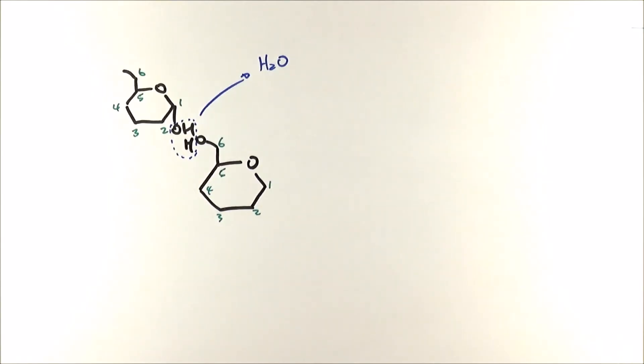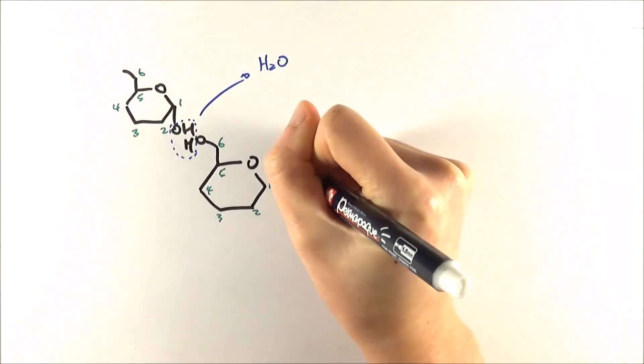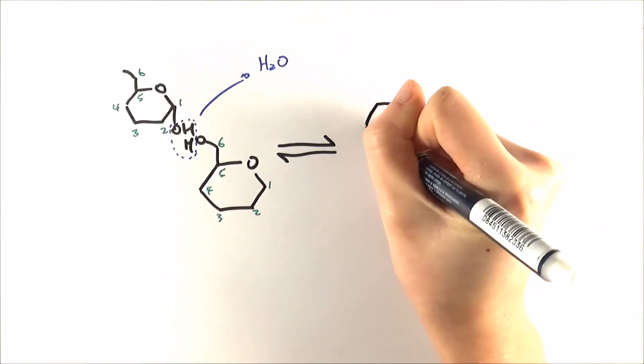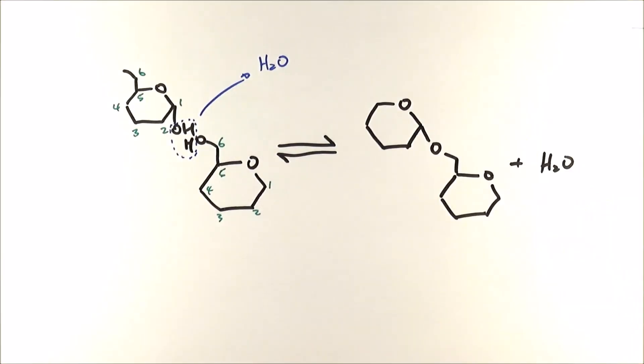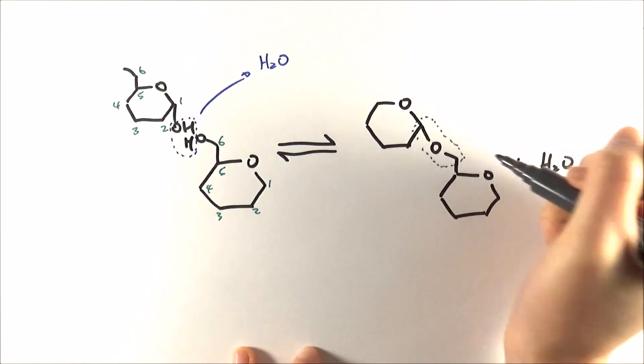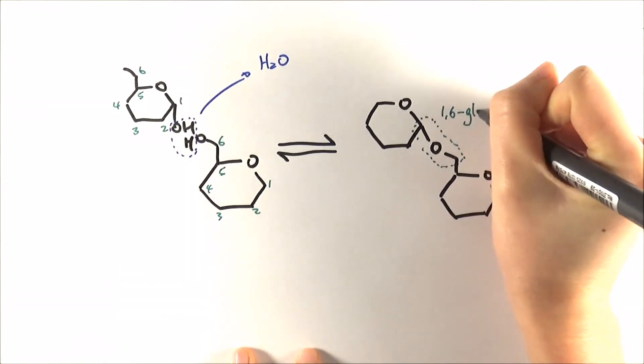And so the two glucose molecules join up in this case again in the condensation reaction to become a disaccharide. The glycosidic bond is formed between carbon 1 and carbon 6. Hence this is what we call the 1,6 glycosidic bond.